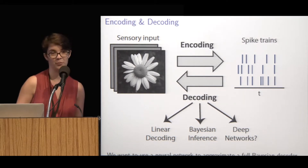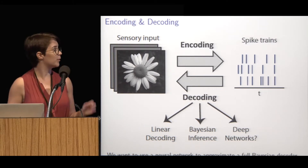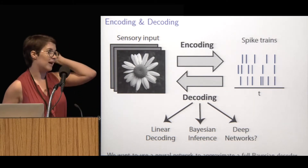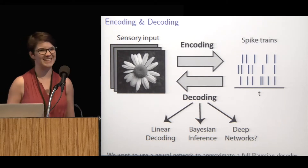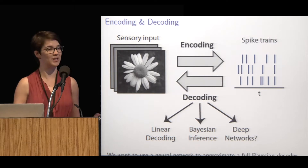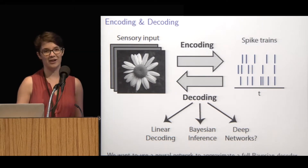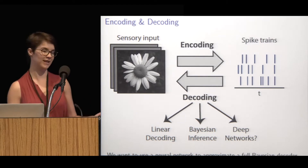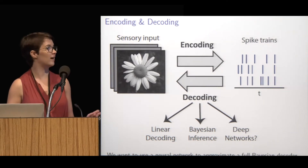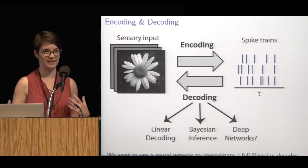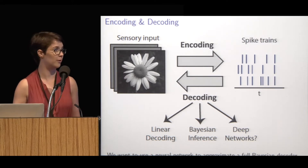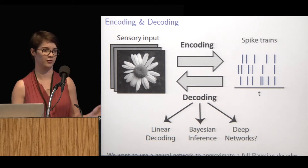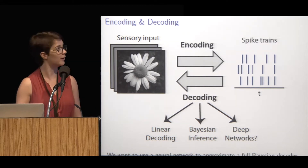We propose to use deep neural networks to help enhance the decoding. These have been obviously successful at many different tasks, especially in the image realm, and are very good at denoising and super resolution, which are both relevant to decoding. We also hope that the deep neural network could implicitly learn statistics of the stimulus — basically, use a neural network to approximate the full Bayesian decoder without this explicit prior.